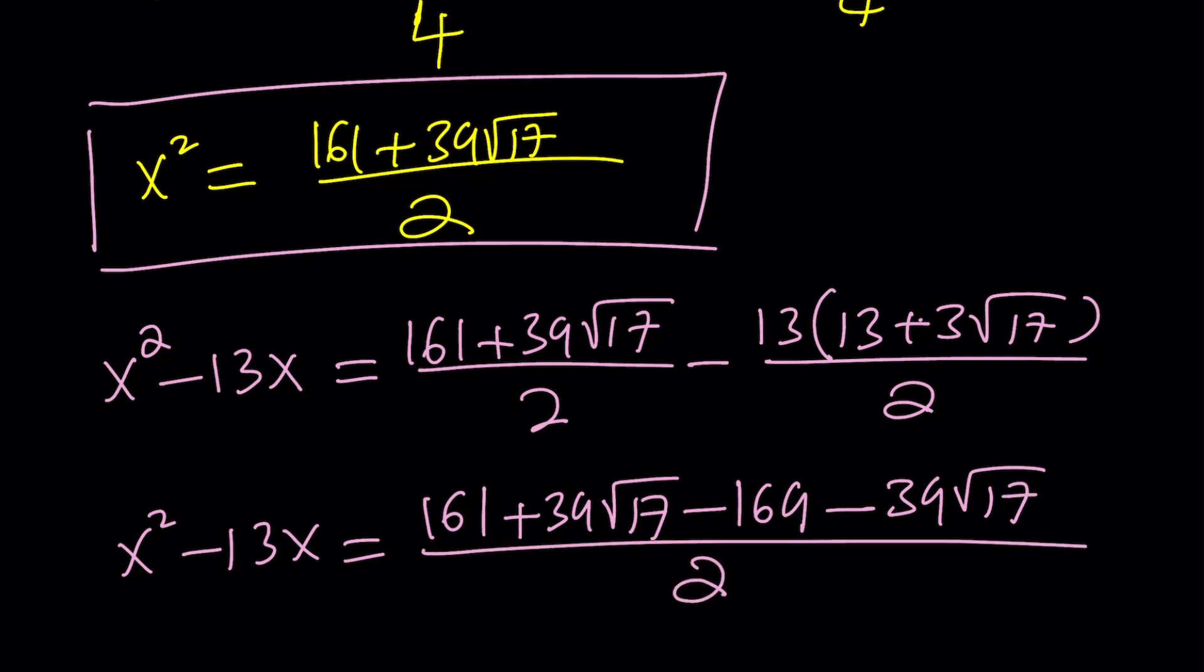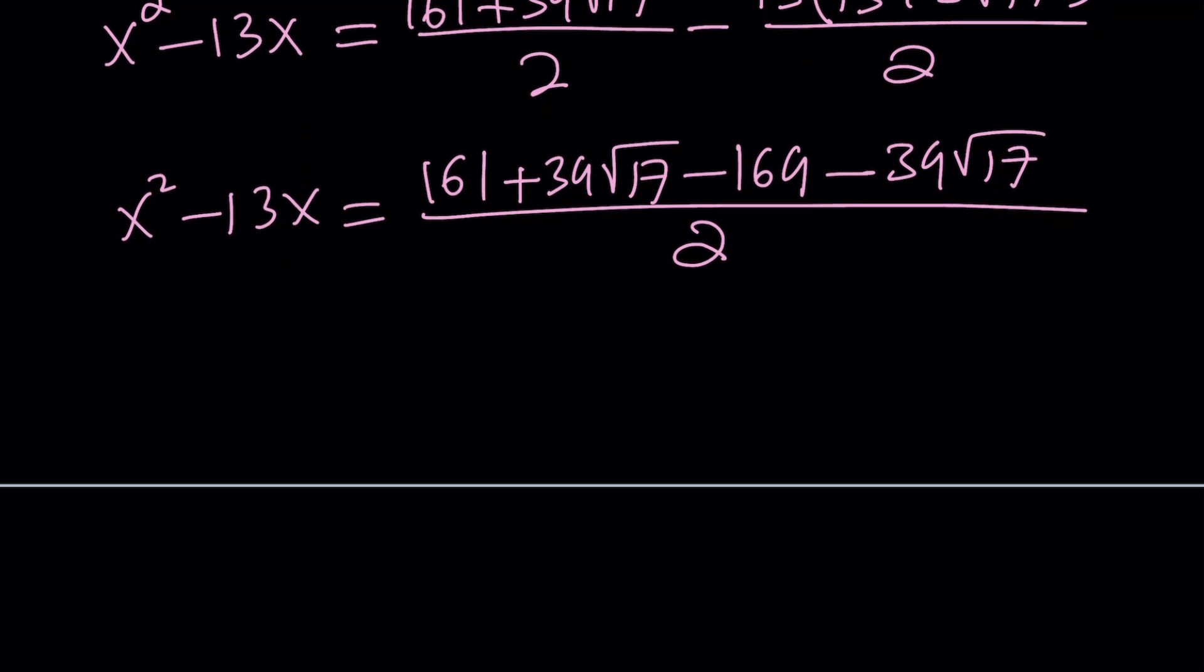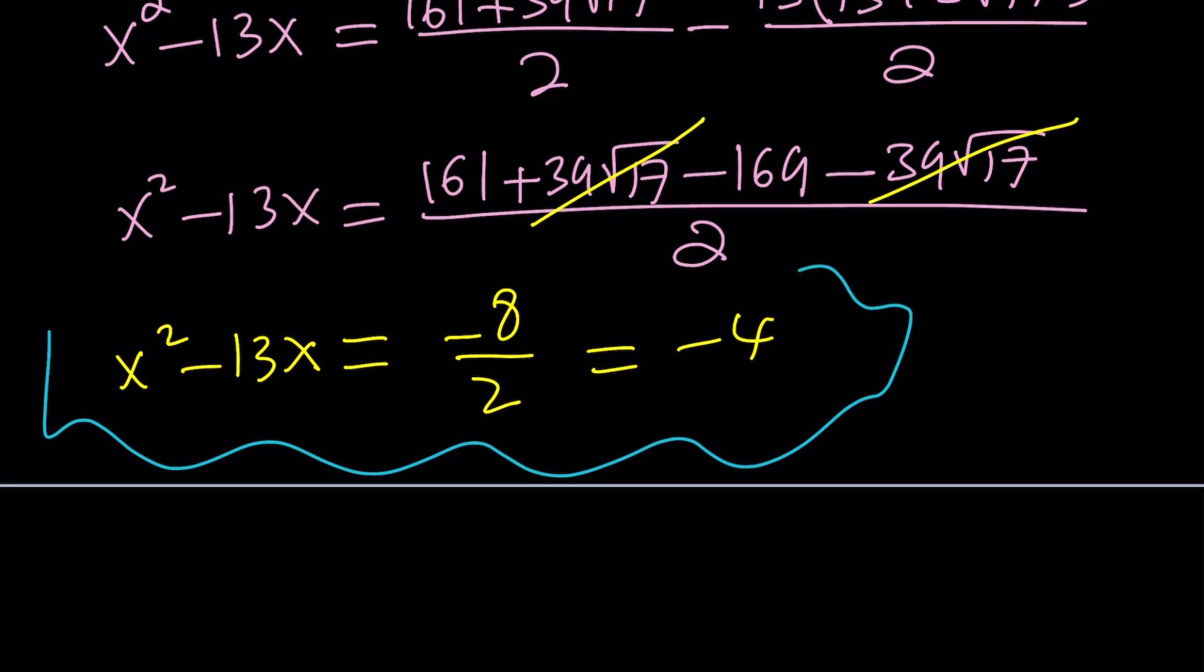And here, magic or mathematics happens. 39 root 17 cancels out. 161 minus 169 is equal to negative 8. Divide by 2 becomes negative 4. So the answer is negative 4, as you can see here.